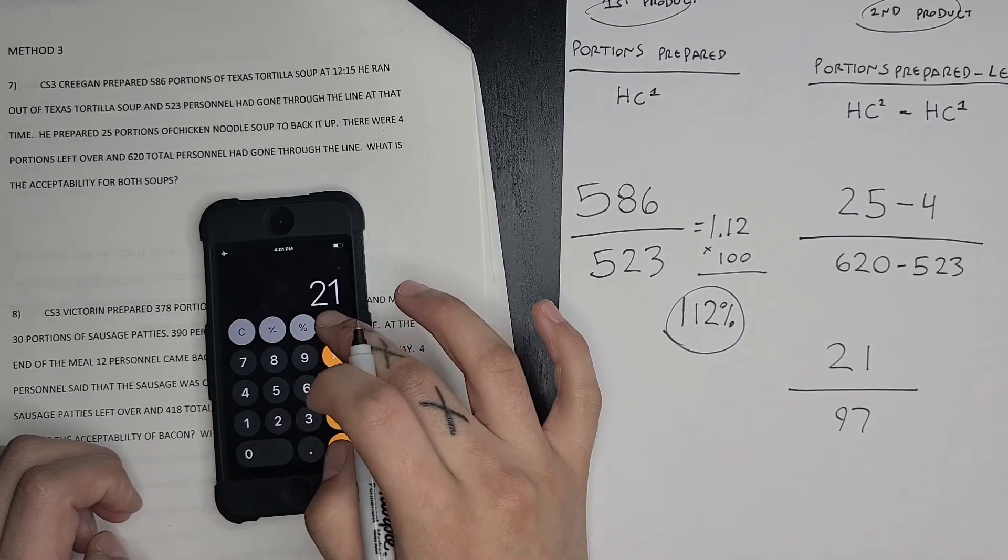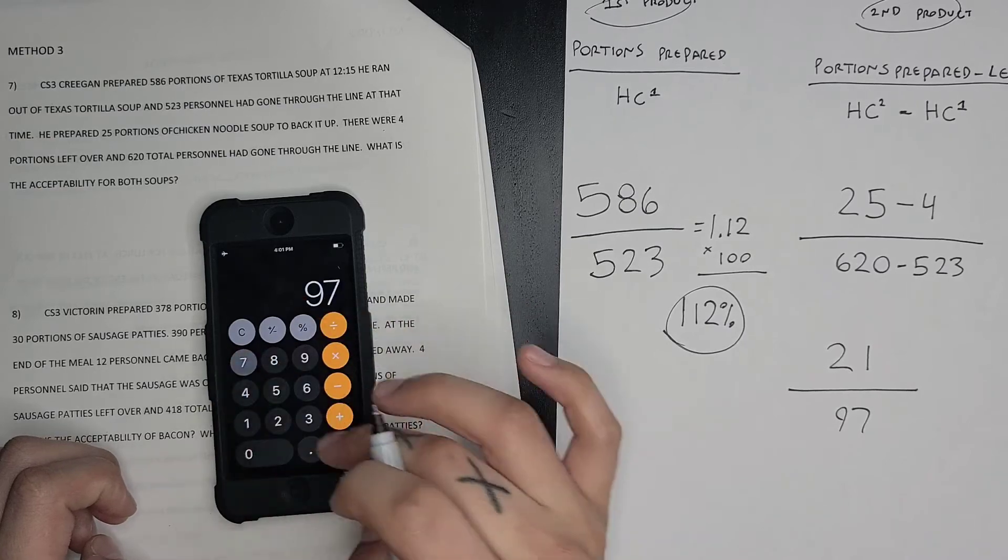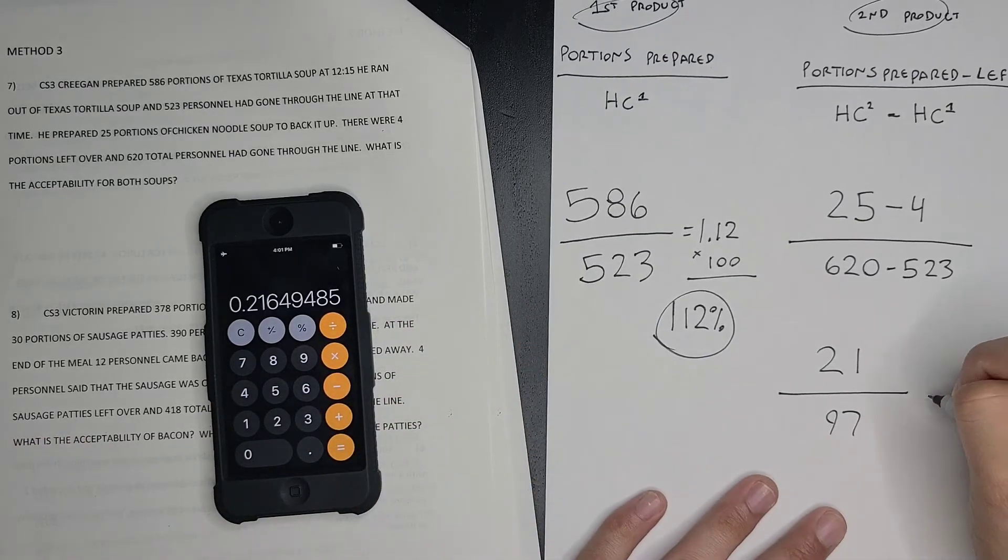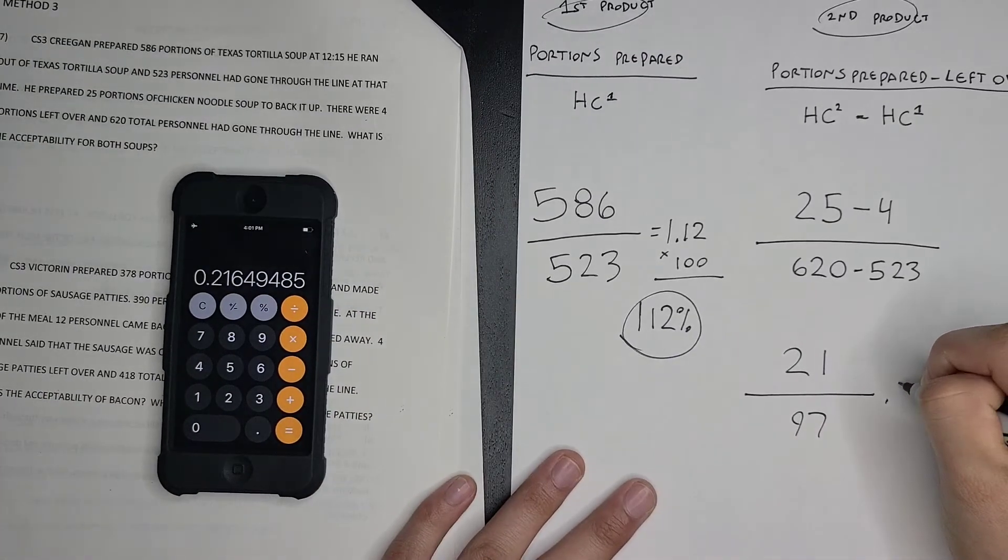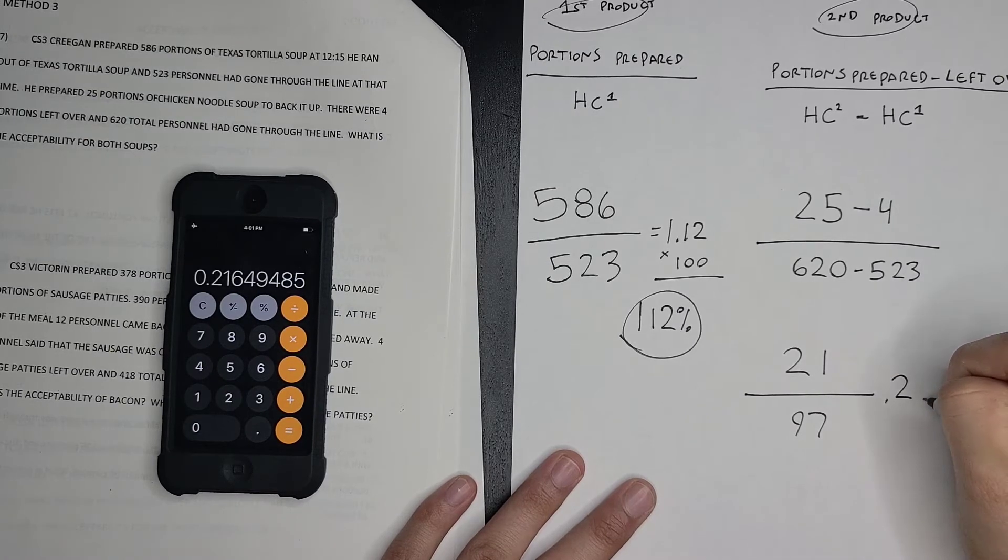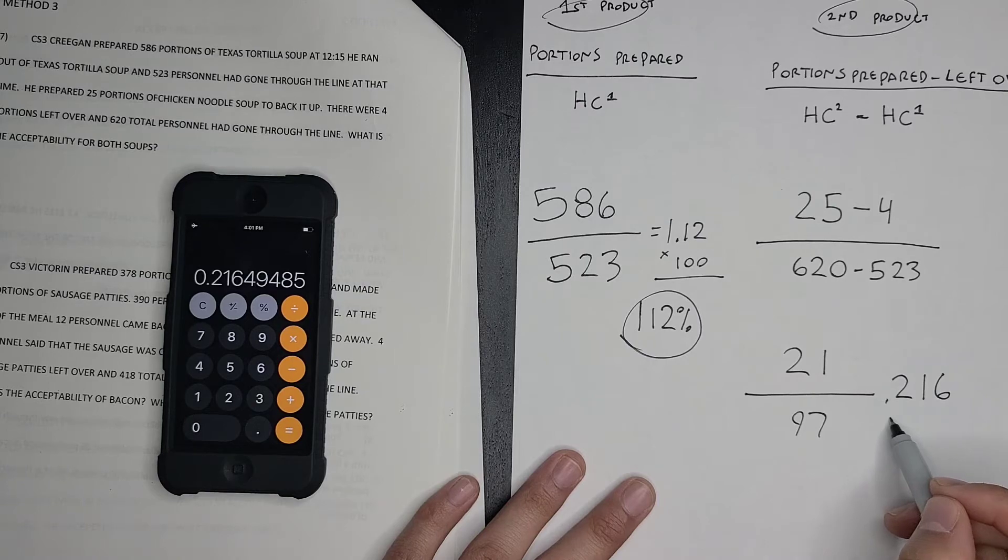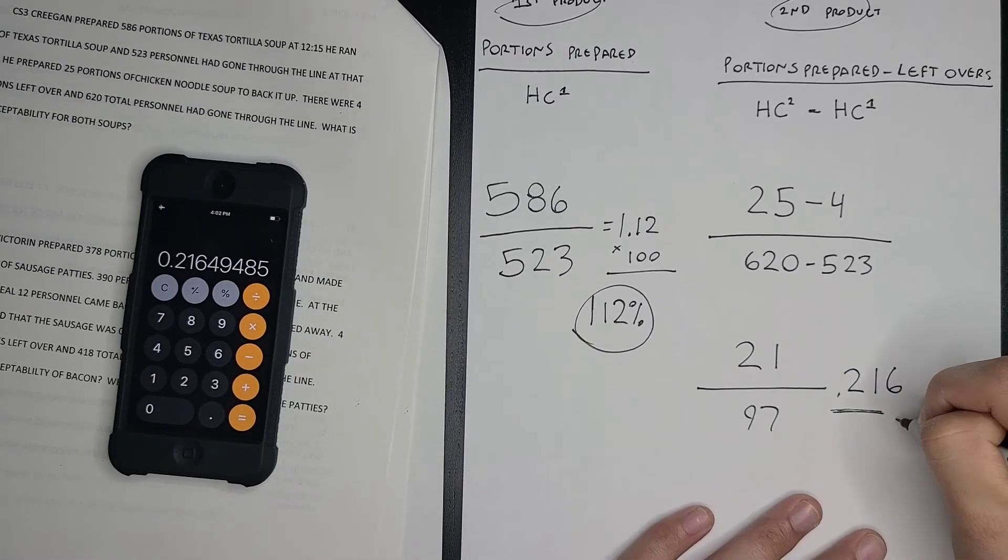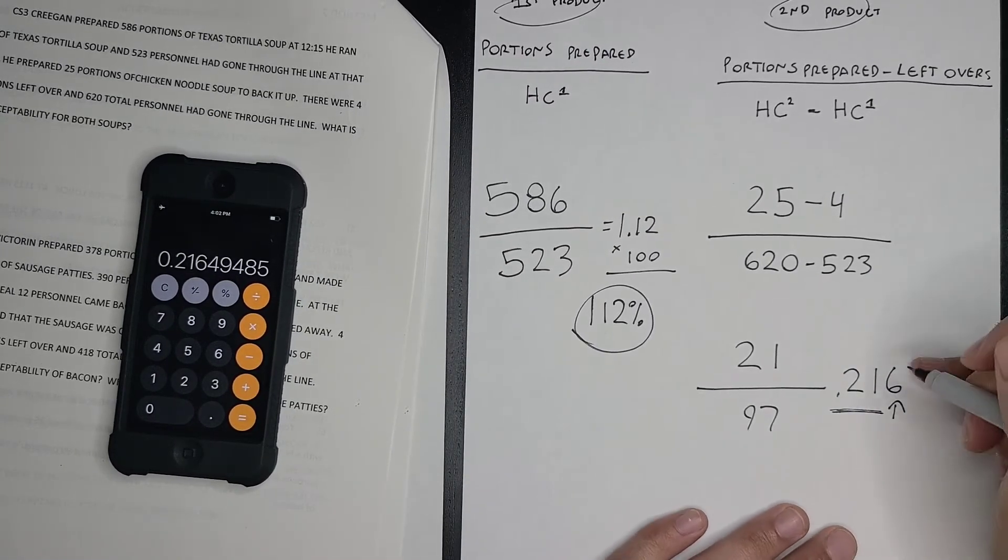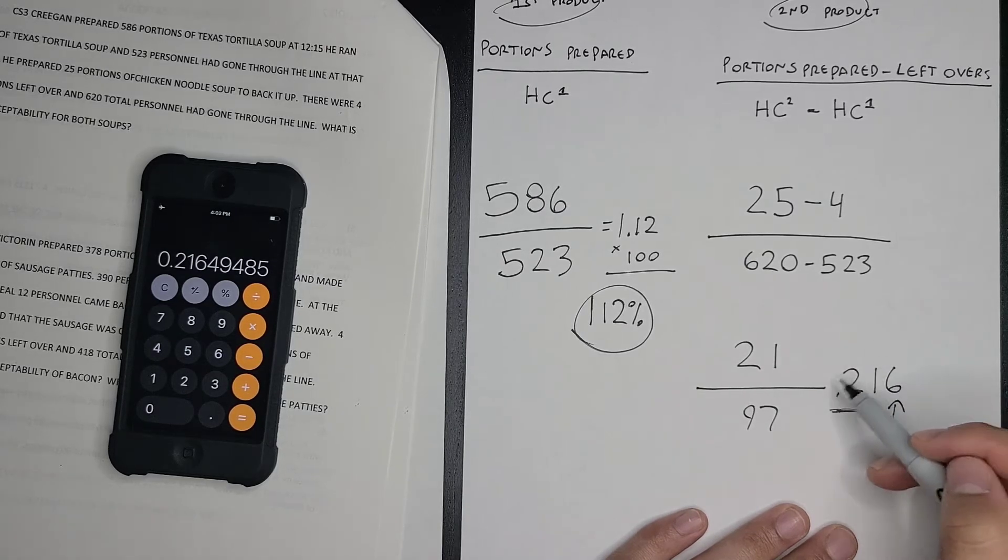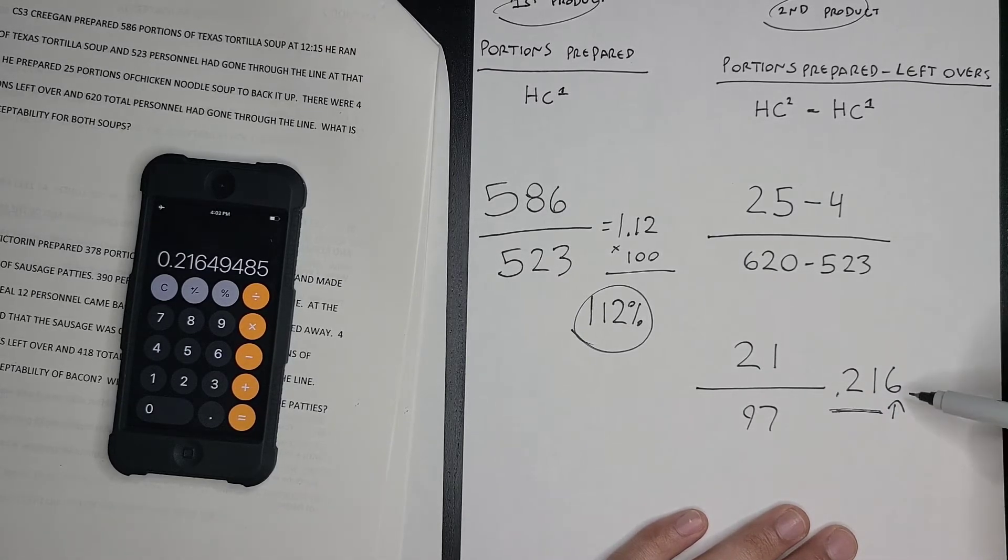So 21 divided by 97 equals 0.216. Again, we only need the numbers to the hundredths place. If this third number is four below, this number is going to stay the same, but since it's five or above, you have to round up.